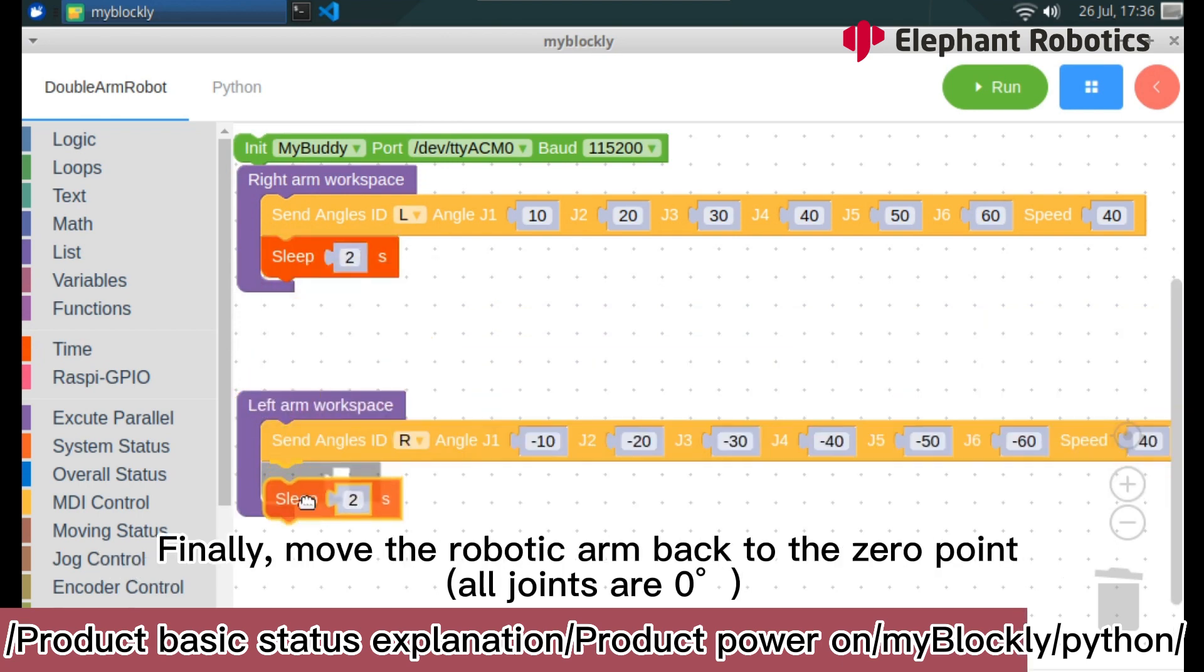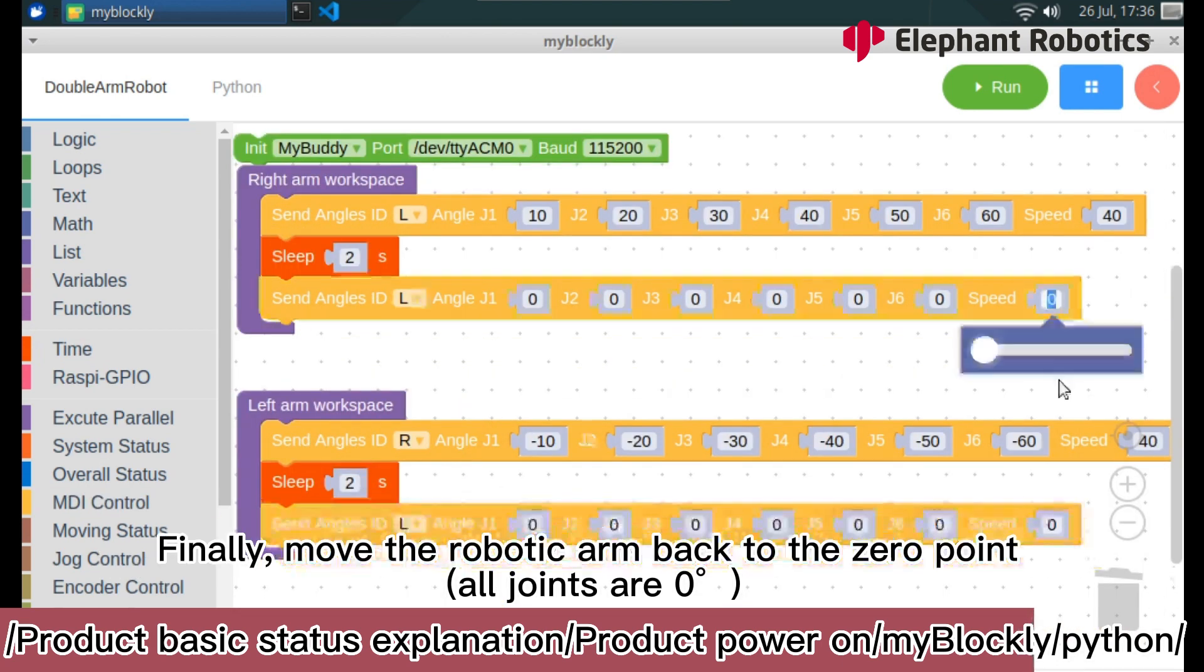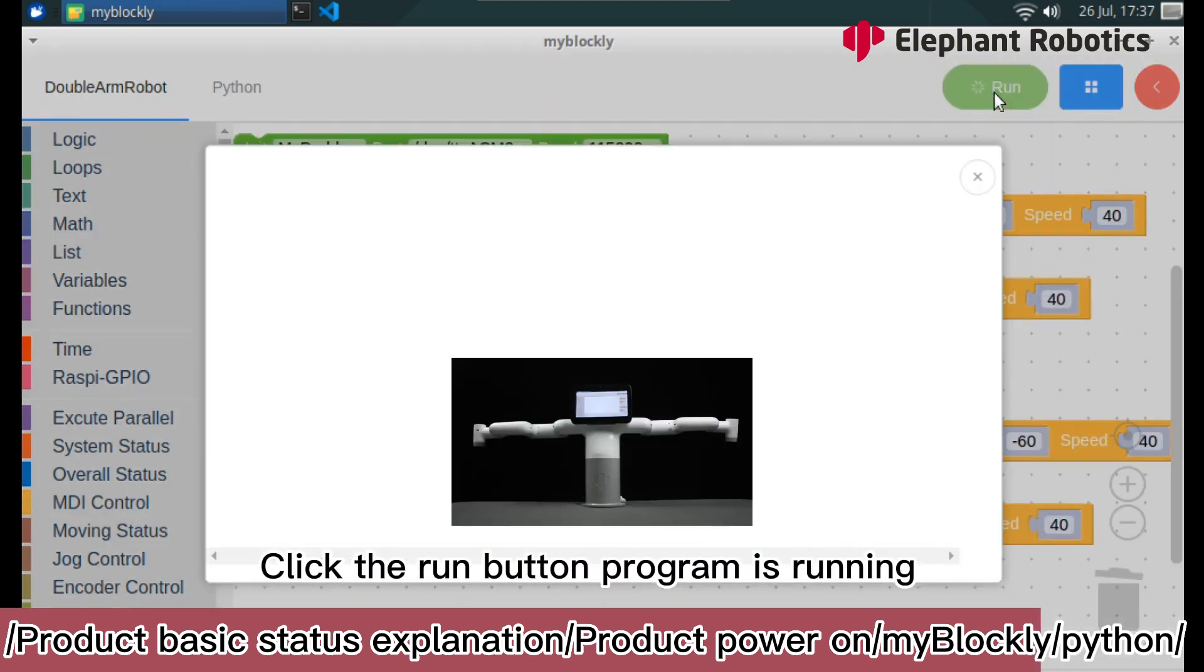Finally, move the robotic arm back to the zero point. Click the run button, program is running. End of run.